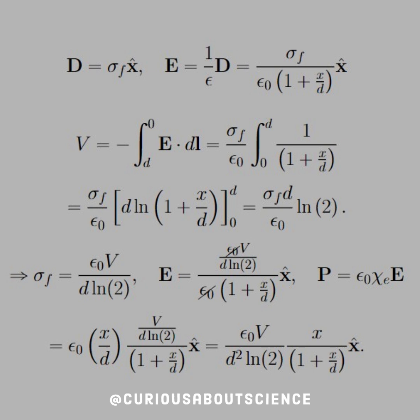From there, we can find the voltage via the line integral of E. And then we can write the free charge in terms of V. A couple steps in the calculus, but pretty simple integral. Solve that for the free charge, sigma f. And we see that that's equal to epsilon naught V over d times ln of 2.